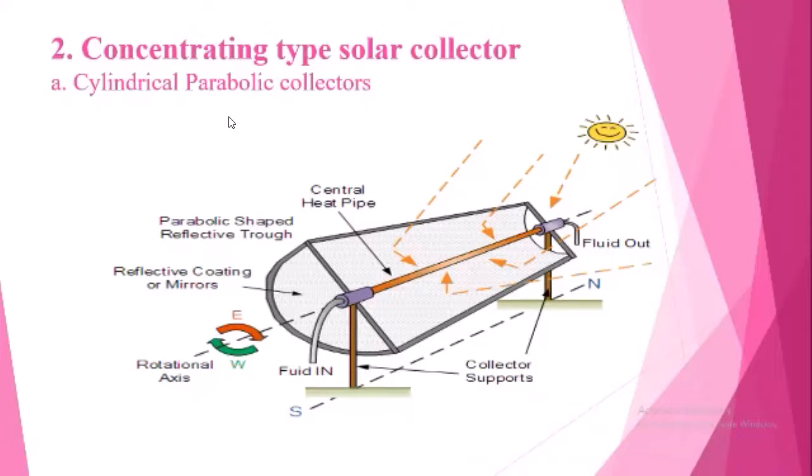A pipe is installed at the central location with a parabolic-shaped reflective trough. Reflective coating or mirrors are provided on the inner surface of the parabolic trough. The rotational axis runs east and west.